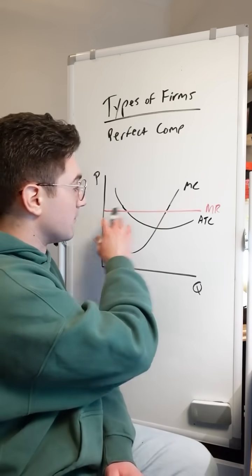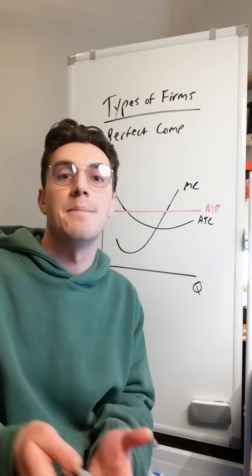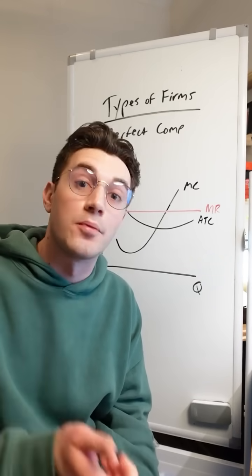Remember, last video we covered that the marginal revenue curve is horizontal because it equals the price that's set by the market. Perfectly competitive firms are price takers.